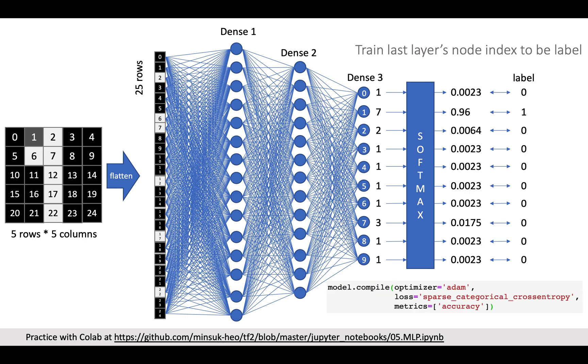And then, we train MLP so that the last layer's nodes represent the one-hot encoded label. After trained, you can expect the highest probability node represent the label.